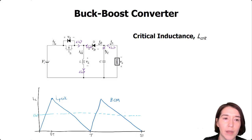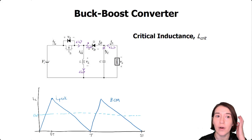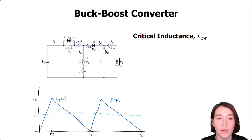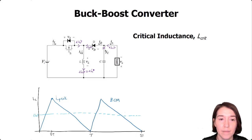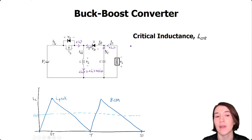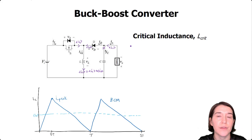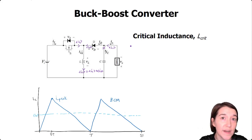Now we have the two currents defined. We can rewrite the average inductor current as the average input current plus the average output current. With that, we can now start writing the inductor equation to find the critical inductance.